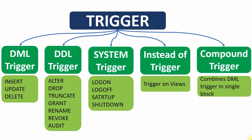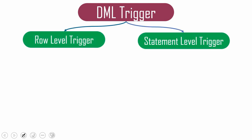Before starting with compound trigger, let me give a quick overview of types of DML triggers. DML triggers are broadly classified into two types: row-level trigger and statement-level trigger. The row-level trigger will get executed for each and every row that is getting affected, whereas the statement-level trigger will get fired once for the entire DML statement.